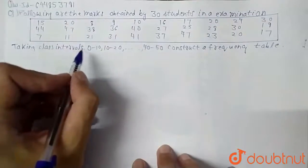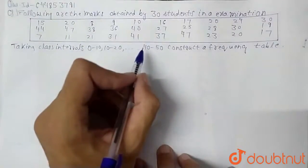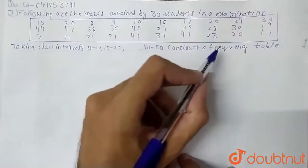Taking class intervals 0 to 10, 10 to 20, to 40 to 50, construct a frequency table.